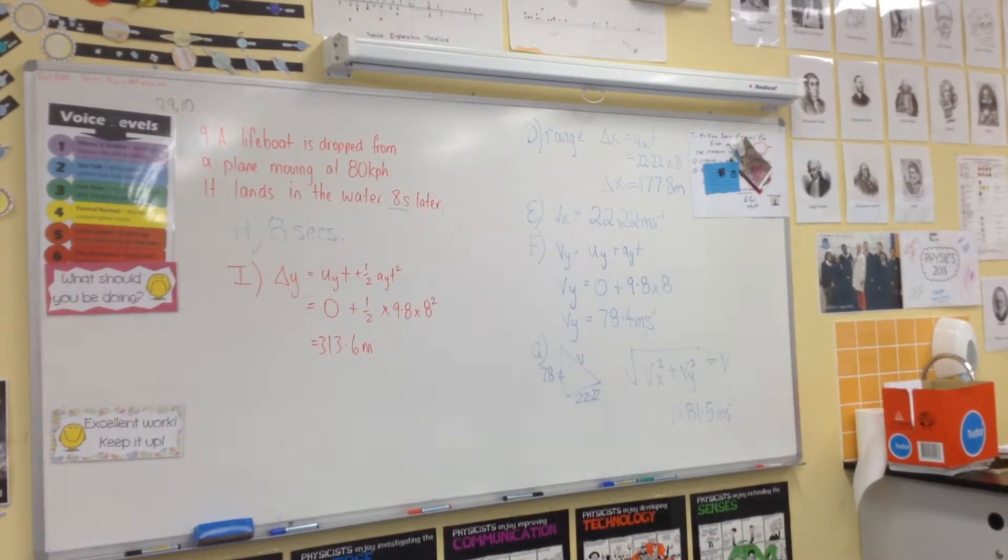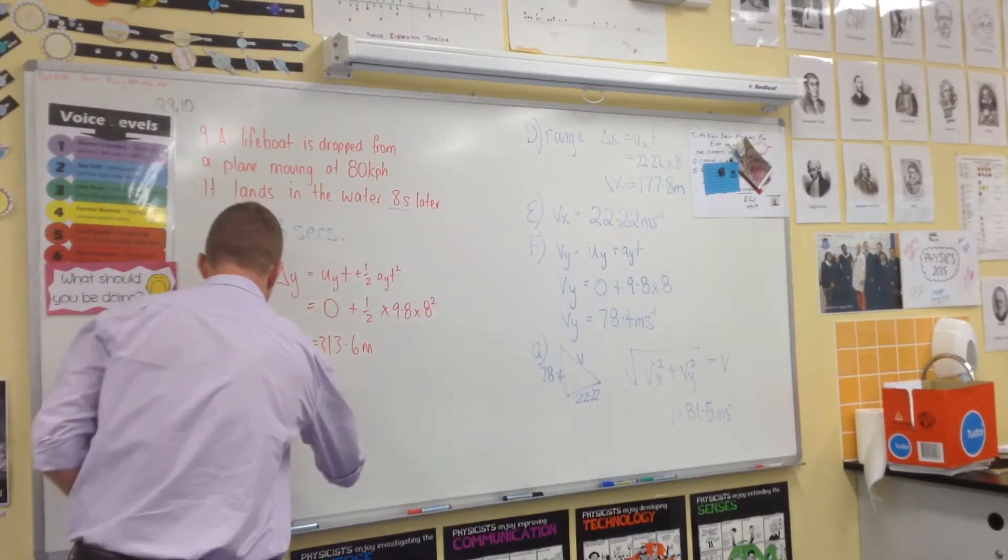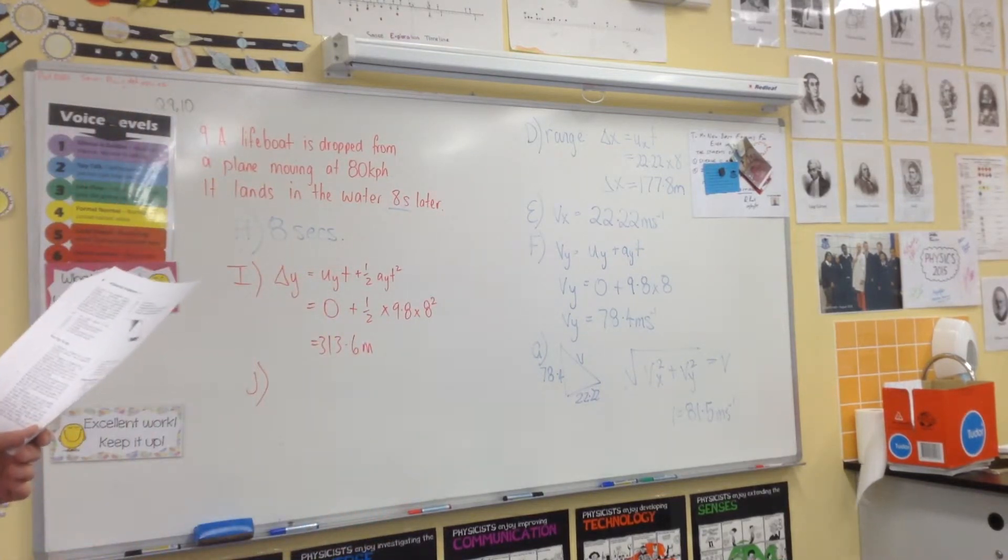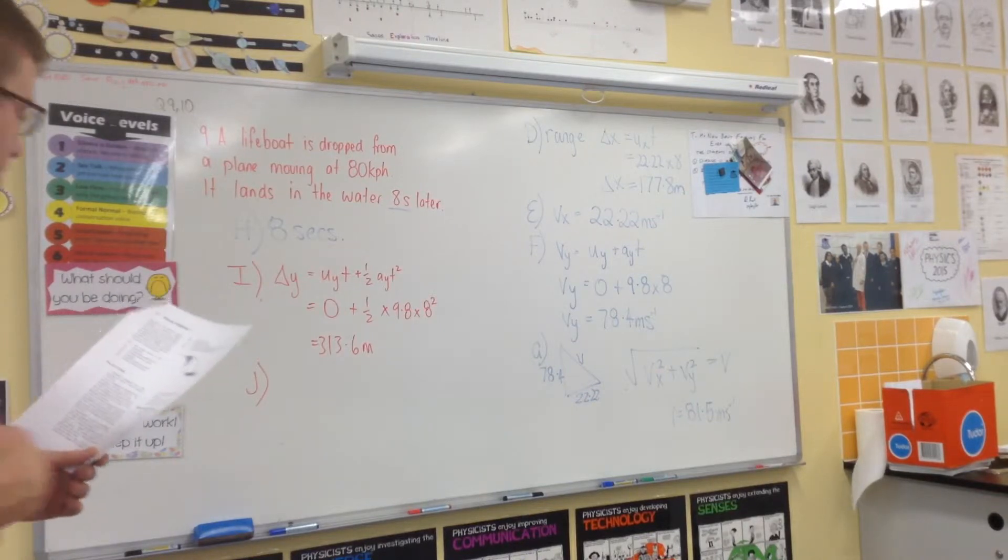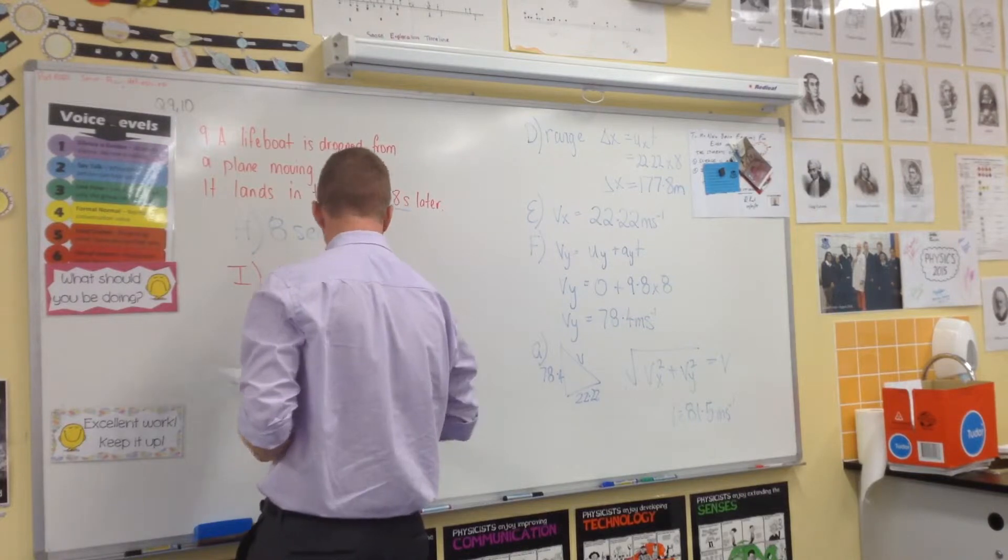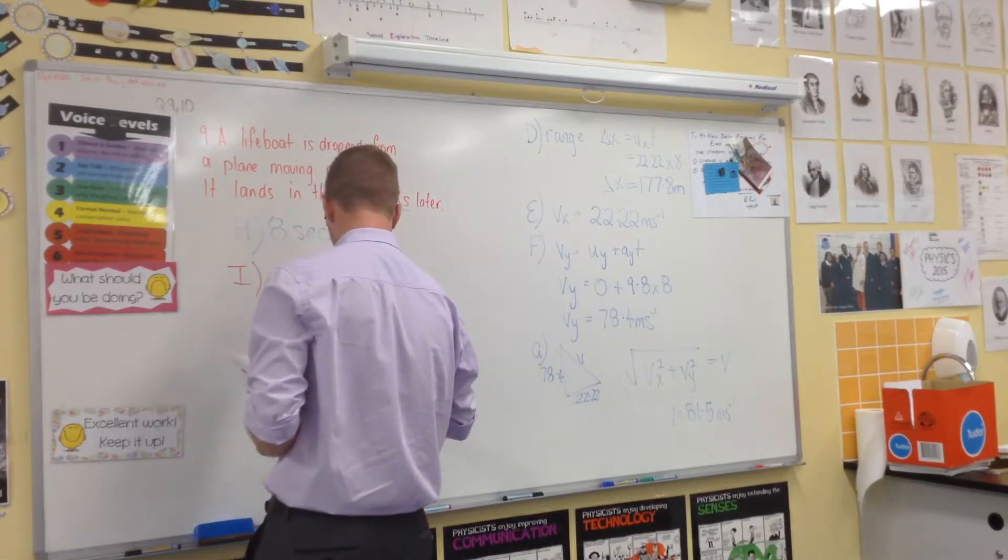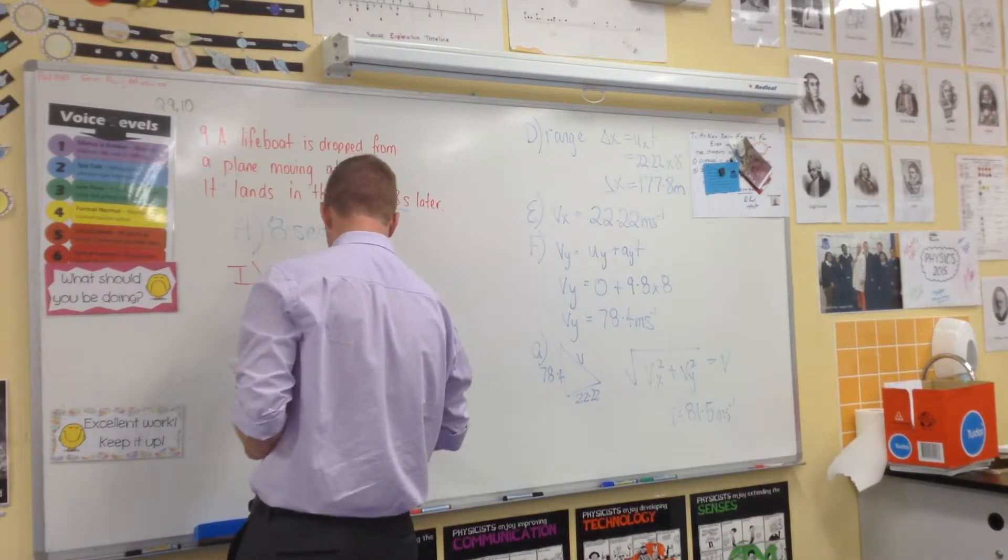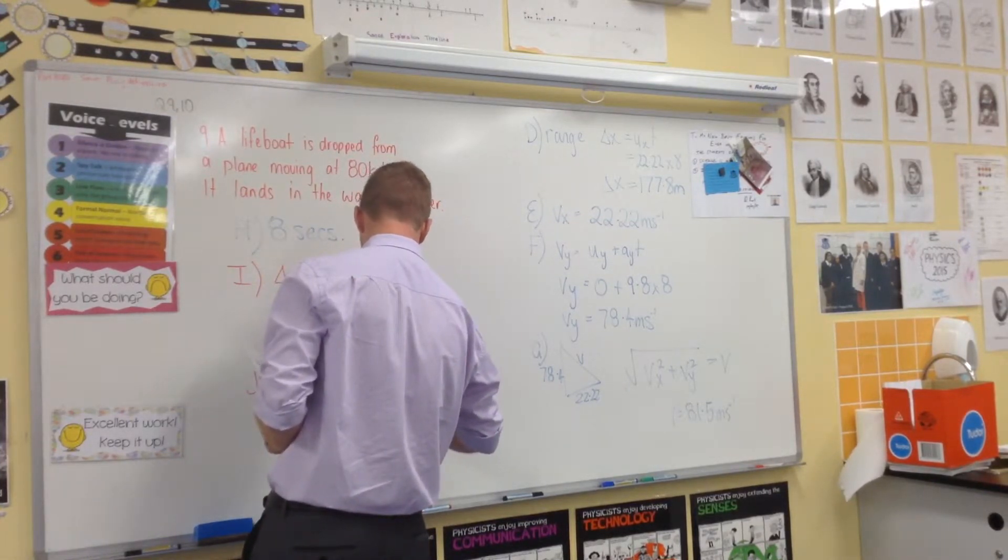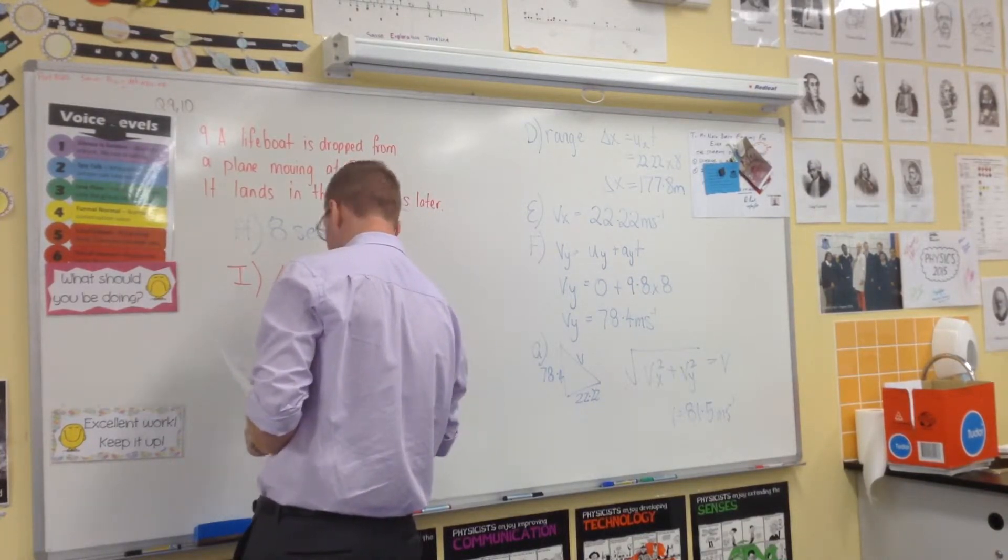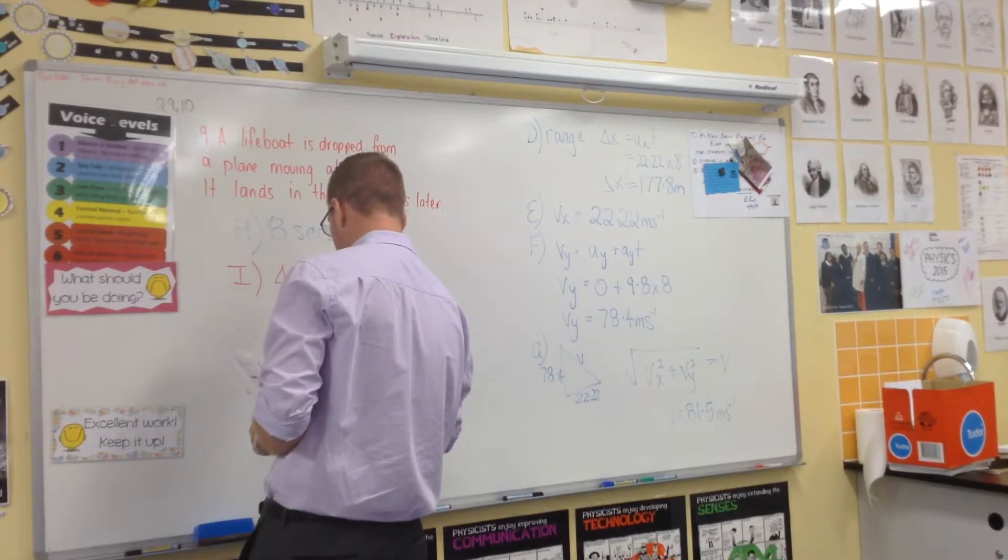J: velocity after 3 seconds after dropping. So let's look at that same equation. V equals UY plus AYT. V equals 0 plus 9.8 times 3. And what's the answer? 29.4 meters—30 meters is VY.